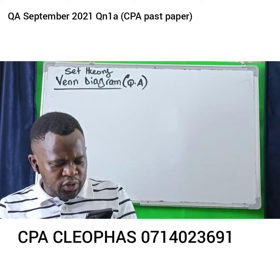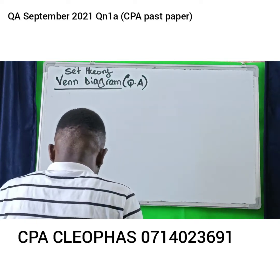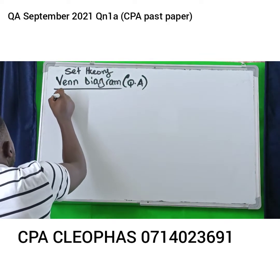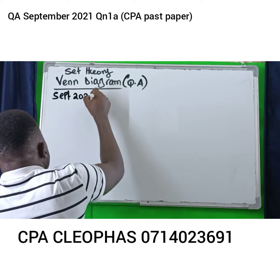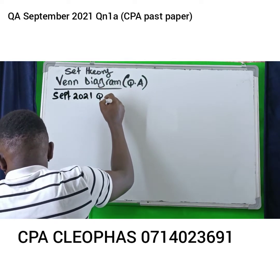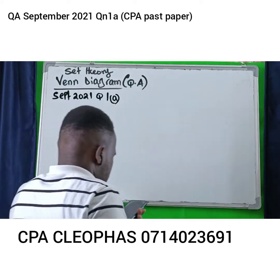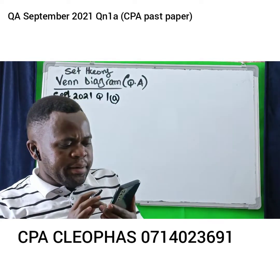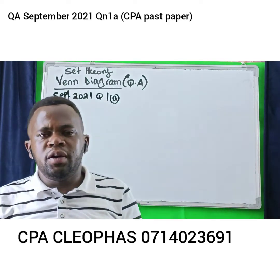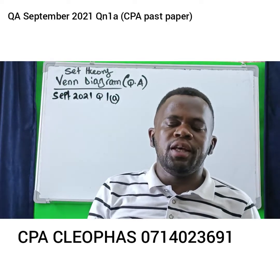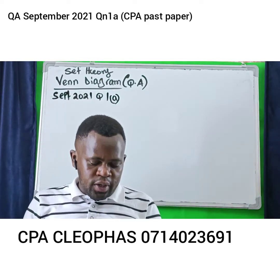Allow me to do this — September 2021 past paper, that is QA, question number 1A. I read this past paper as I've always been saying — you can find them online, they are there. So I read September 2021, QA, question number 1A.